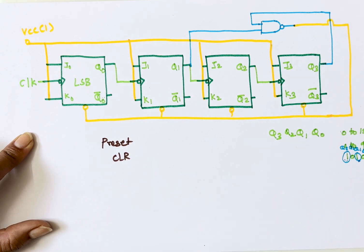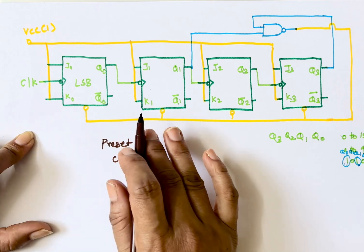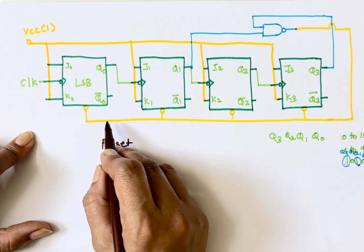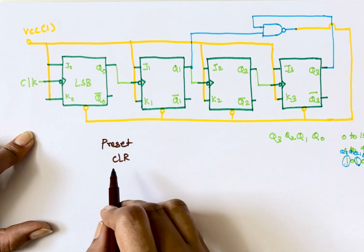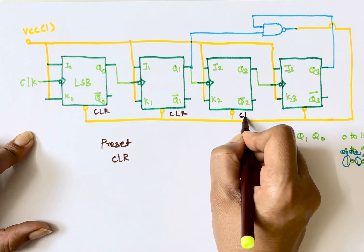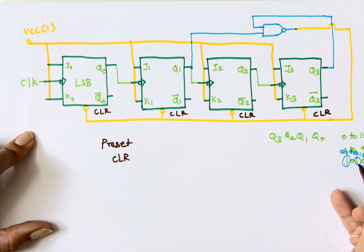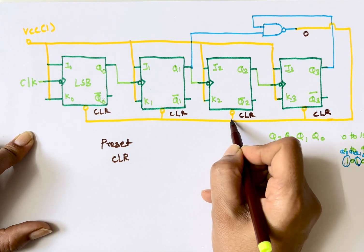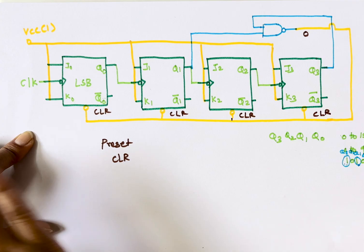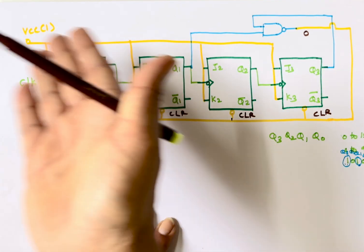The preset and clear inputs are asynchronous inputs, meaning as soon as they receive a value, they don't wait for any clock input — they immediately change the output. They can be active high or active low. Active low means when they receive 0, they act. A bubble on the input symbol indicates active low. So when the clear input receives 0, it will clear all the contents.